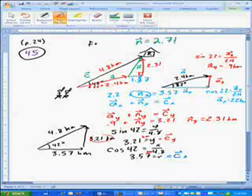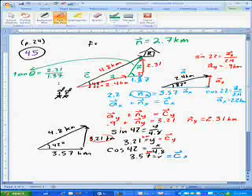Now the direction, I'm going to need an angle. So I'm going to find this angle right here. I'm going to use tangent because I'll do opposite over adjacent. So the tangent of the angle equals the opposite over the adjacent. So the angle equals the inverse tangent of 2.31 over 1.37.